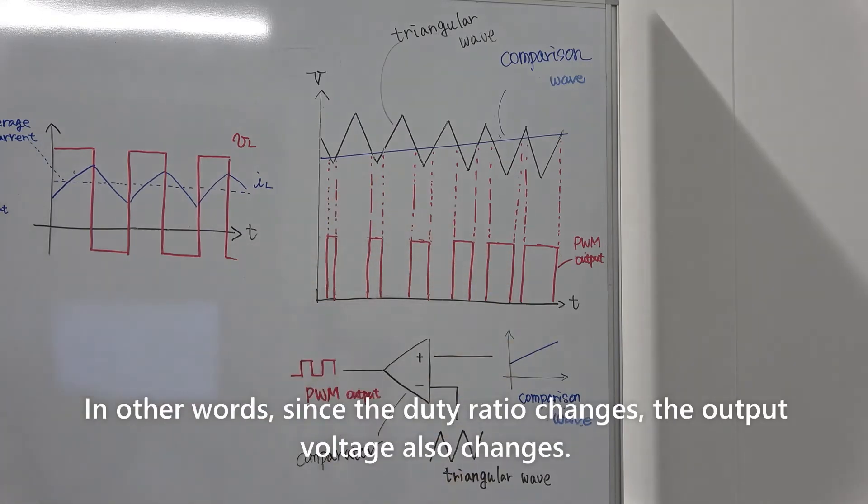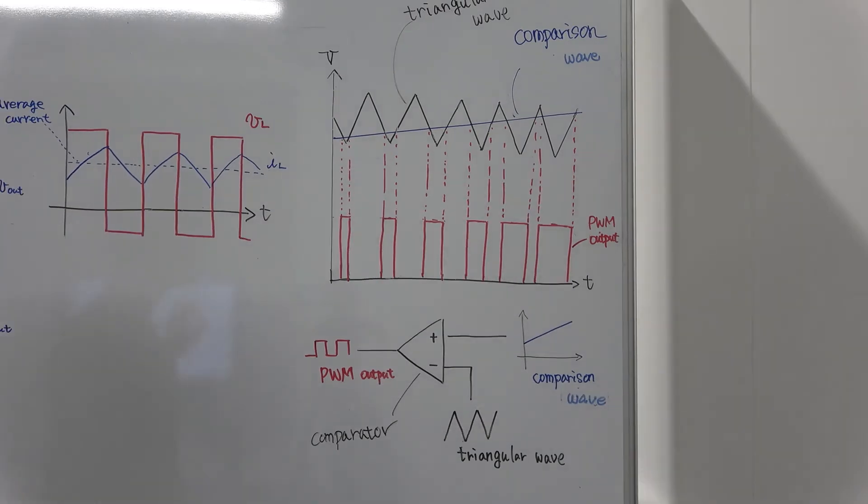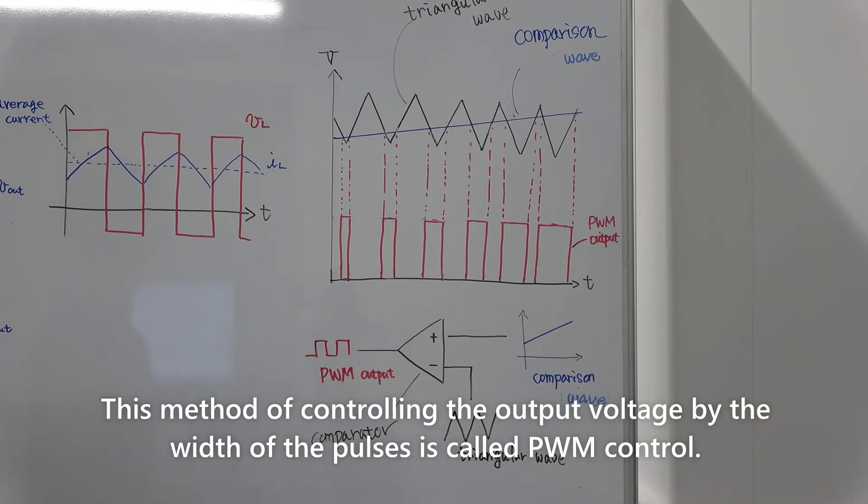In other words, since the duty rate changes, the output voltage also changes. This method of controlling the output voltage by the width of the pulse is called PWM control.